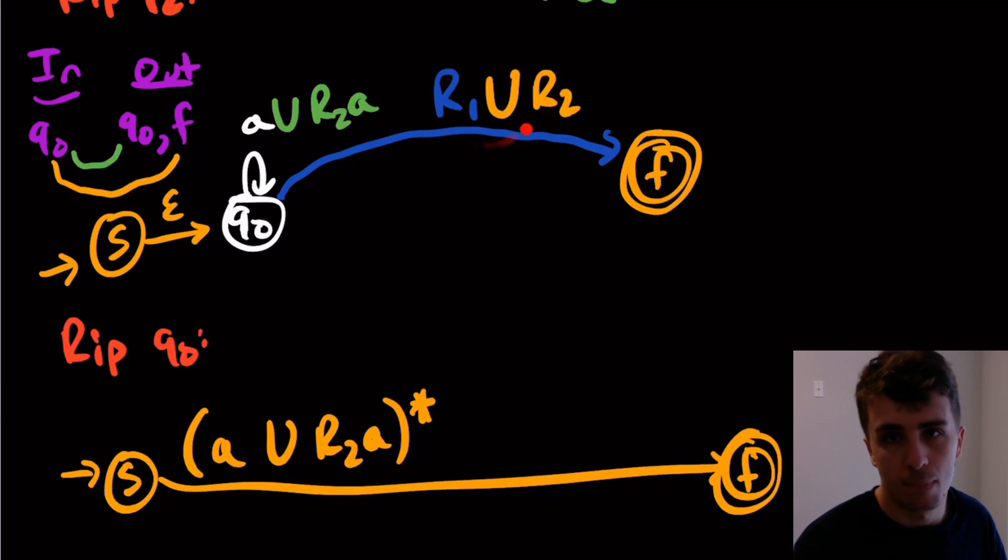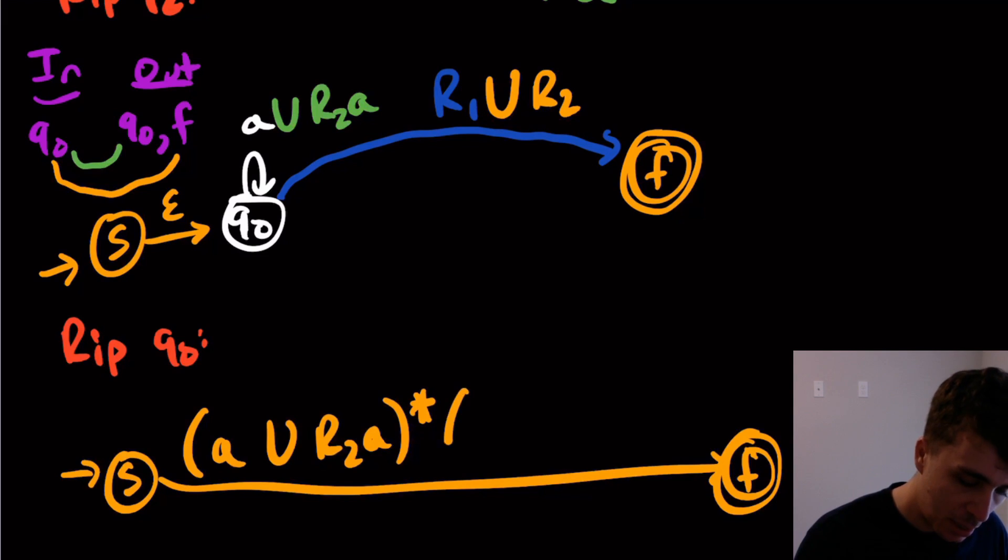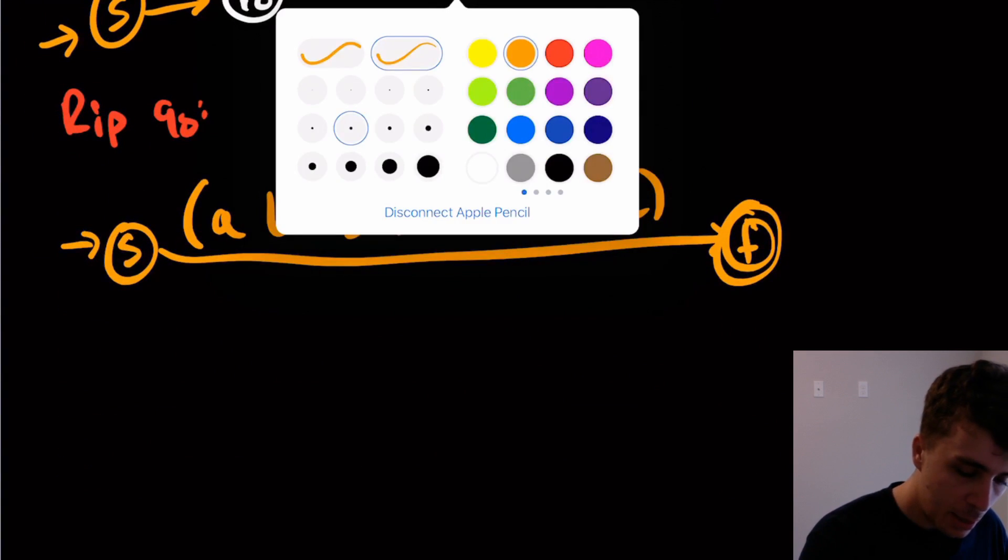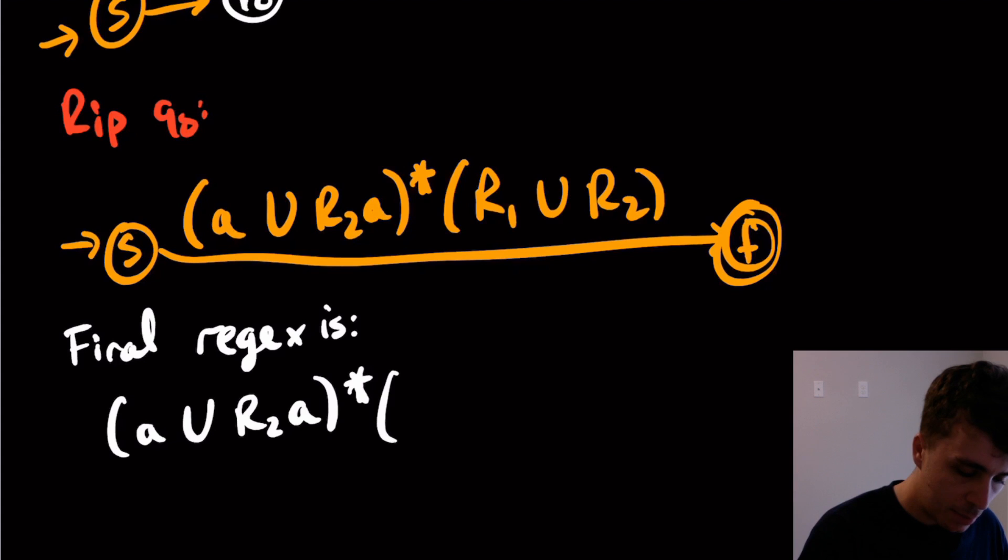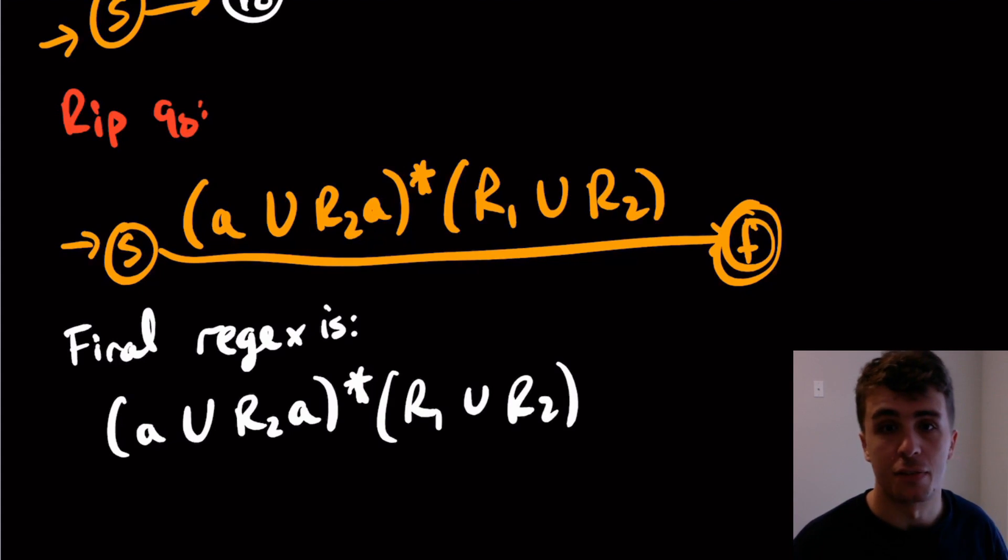So R1 union R2 here. So then, therefore, the final regex is going to be A union R2 A star R1 union R2. And so that's the final regex for this NFA that we chose.